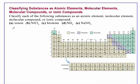Classify each of the following substances as an atomic element, molecular element, molecular compound, or ionic compound: (a) xenon, (b) NiCl2, (c) bromine, (d) NO2, (e) NaNO3.